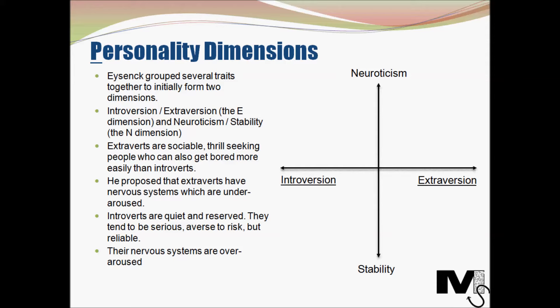Extroverts are sociable, thrill-seeking people who can also get bored really easily. They have the tendency to take risks and are carefree. He also proposed that extroverts have nervous systems which are actually under-aroused, meaning they need more stimulation from the outside world to retain their mental balance. Introverts on the other hand are quiet and reserved. They tend to be serious, averse to risk, but reliable. They can be better planned and have more control over their emotions, as their nervous systems are over-aroused and they don't need stimulation from external sources.